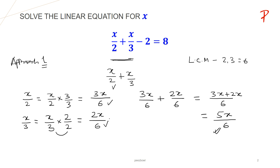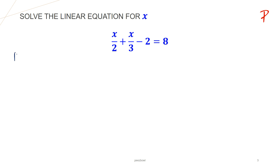So our equation is going to be: for x upon 2 plus x upon 3, I am going to write 5x upon 6. This is going to be 5x upon 6 minus 2 is equal to 8. Let us solve this on the next slide.